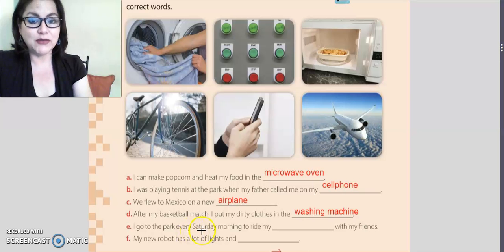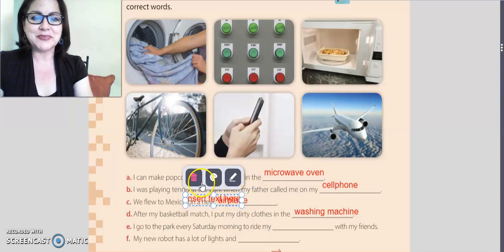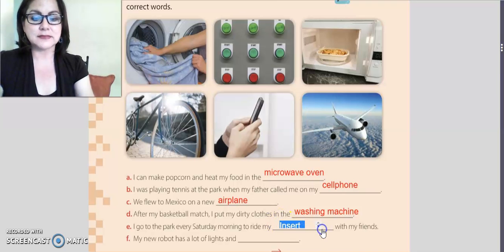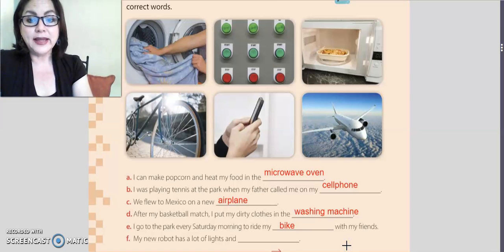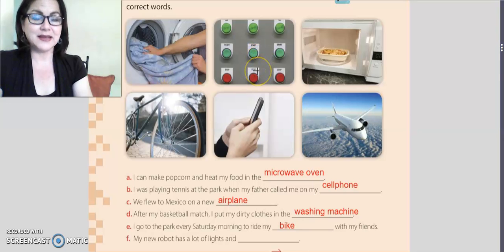Letter e: I go to the park every Saturday morning to ride my — with my friends. Yes, to ride my bike. And letter f: my new robot has a lot of lights, and — what are these, guys? Yes, buttons! Buttons. Okay, buttons.